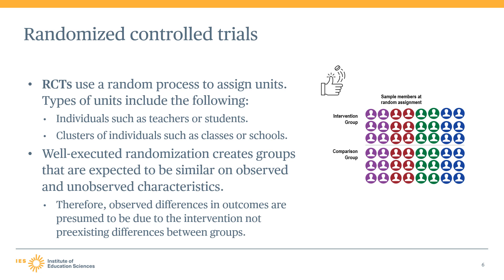Well-executed randomization should create similar groups on average — groups that are similar on both observed and unobserved characteristics. An observed characteristic is something we can measure or record, such as age or test scores, whereas an unobserved characteristic is something not directly measured, such as motivation. When groups have similar characteristics at the beginning of a study, we have confidence that any difference in outcomes between the groups is due to the intervention. When groups are not similar, pre-existing differences could be responsible for observed differences in outcomes.